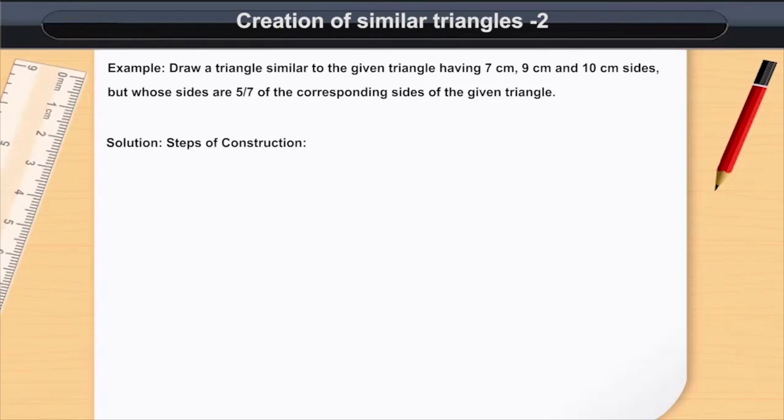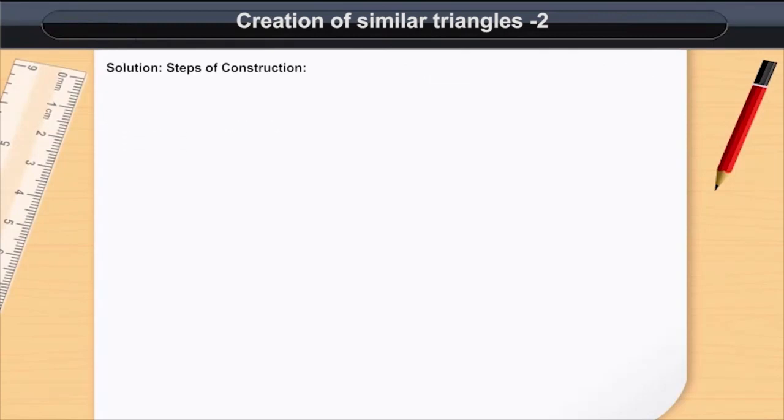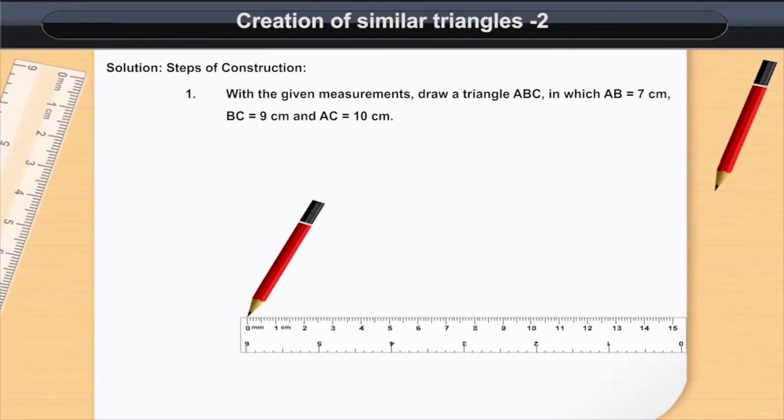Solution: Steps of construction. With the given measurements, draw a triangle ABC in which AB is equal to 7 cm, BC is equal to 9 cm, and AC is equal to 10 cm.